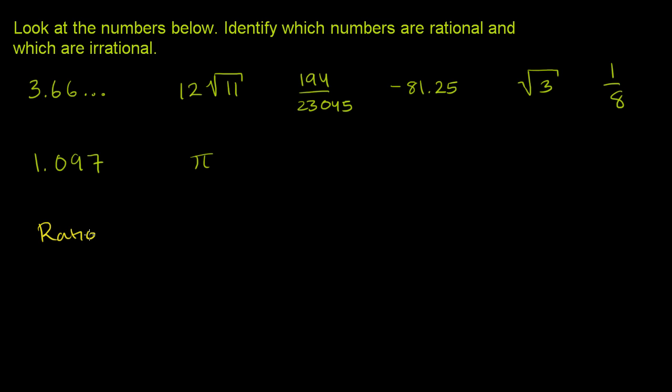So just as a bit of review, let's review what it even means to be a rational number. This means that you can be represented as the ratio of two integers.